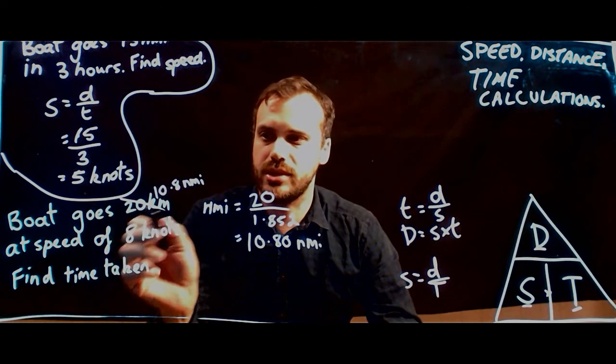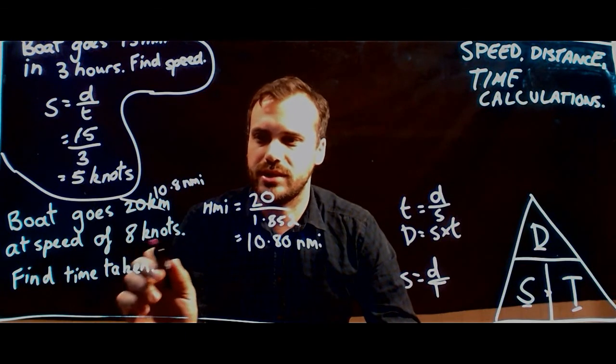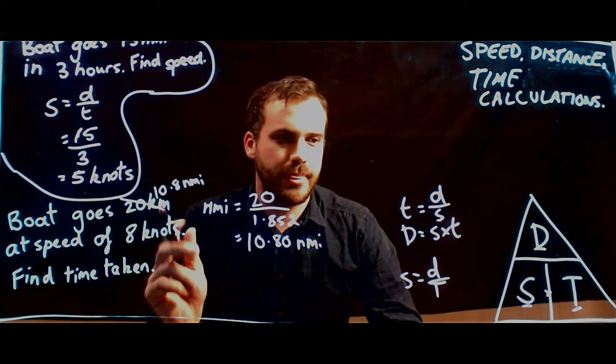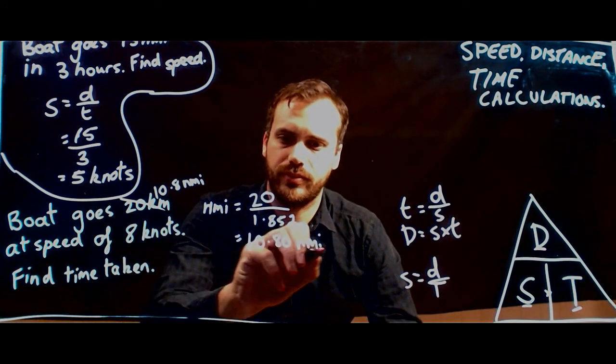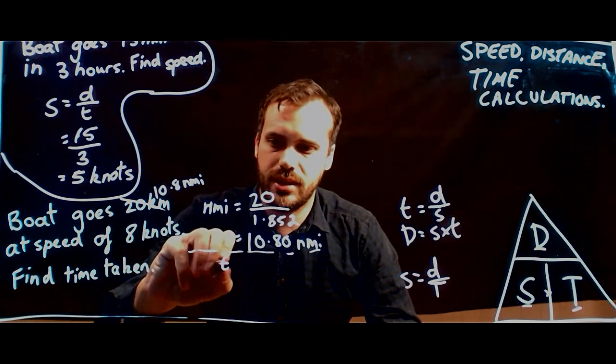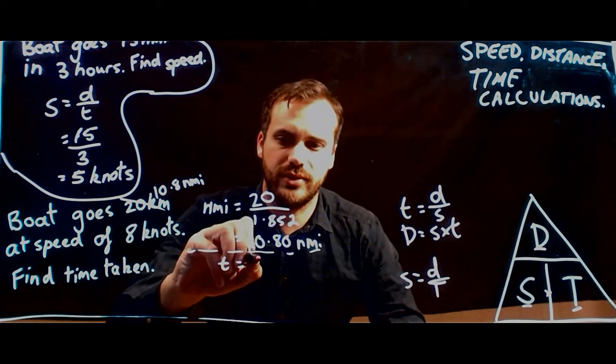Now we can work with this, because this guy's talking like a sailor here, 10.8 nautical miles, and then he's also talking like a sailor here, 8 knots. Now, we're trying to find the time taken. So, t equals, t equals distance over speed.